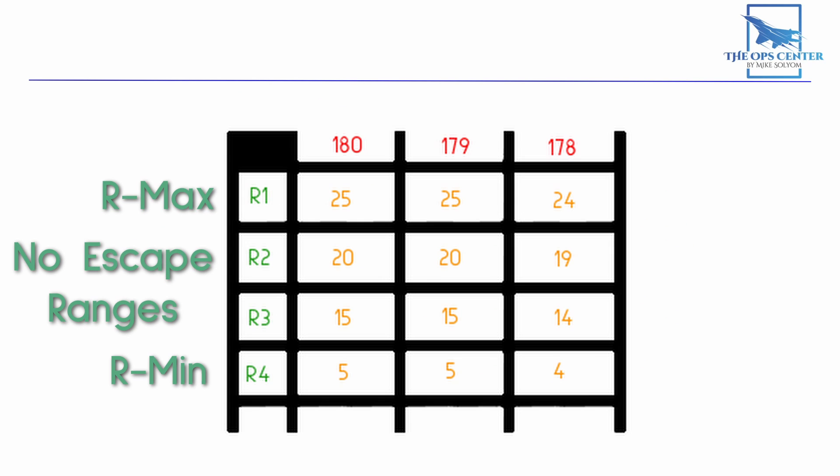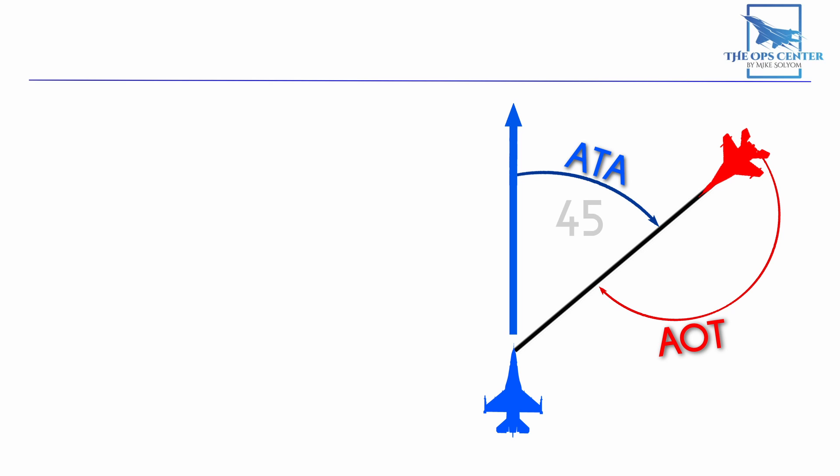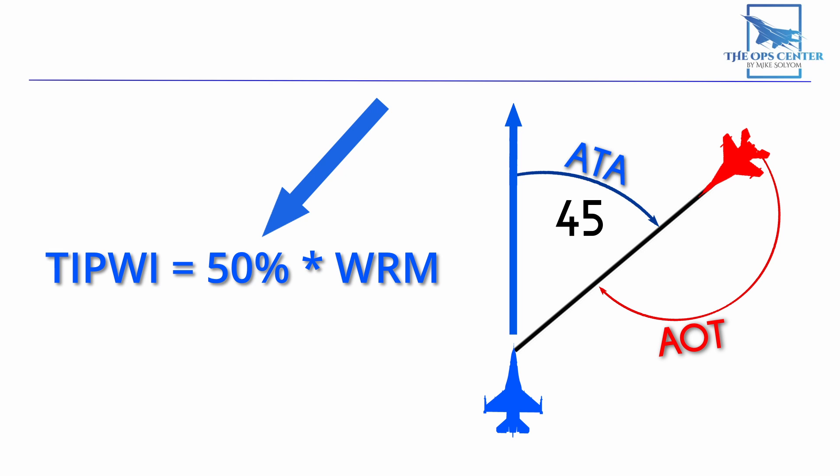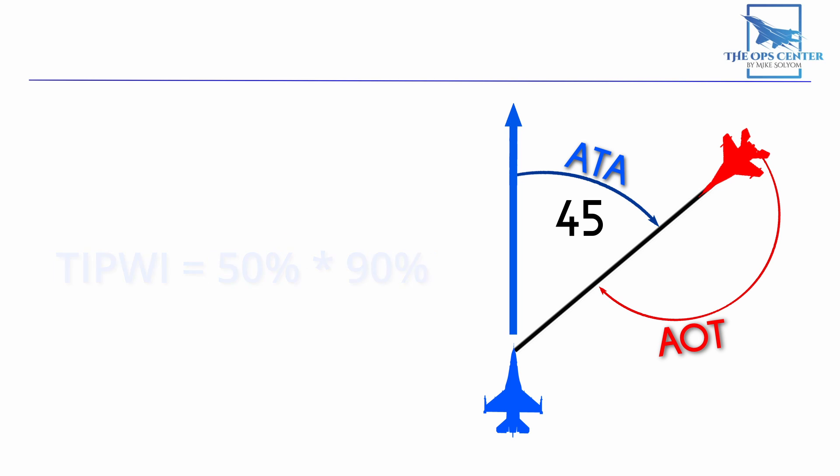All of these R values have a percentage associated with them. That percentage is plugged into the formula for WRM. So let's say we have an ATA of 45. That gives us 50% on this side of the formula. And when we look up our WRM for this range and angle off tail, we get a 90%. 50% of 90 is 45. So our overall TIPWI is 45%.